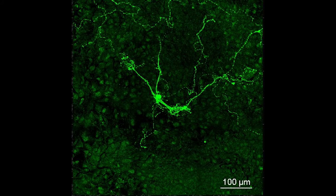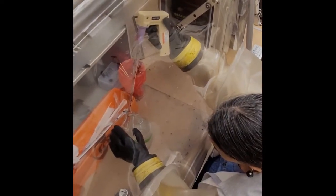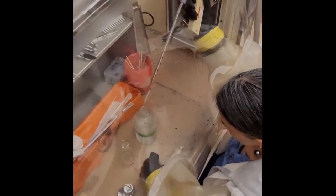But the problem is that GFP doesn't light up if there's no oxygen around. The scientists discovered that they could grow the bacteria in a little bit of oxygen that wasn't too much for the bacteria but was just enough for GFP to light up.